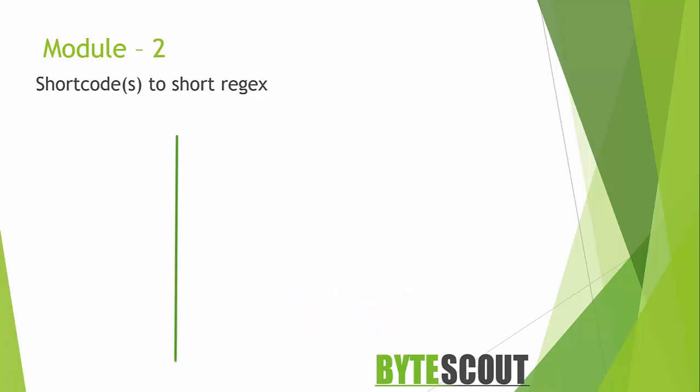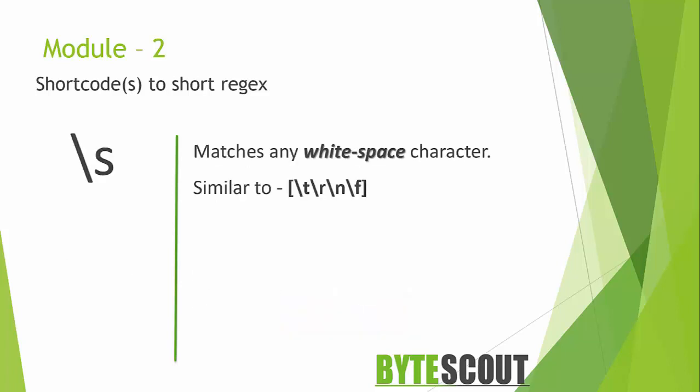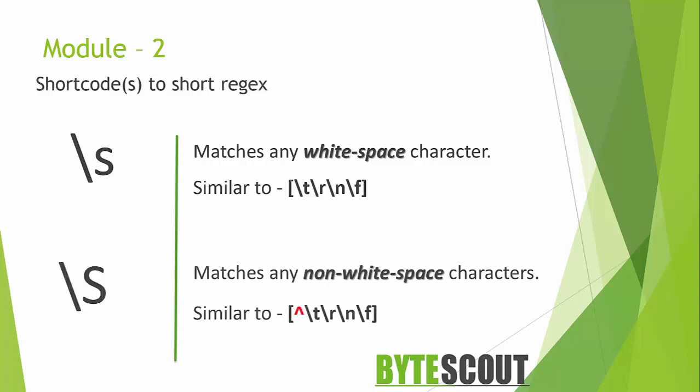The next short code meta character is backslash s, which is used to represent any white space character. This includes spaces, tabs, new lines, etc. Backslash capital S does the opposite — it matches any non-white space characters.